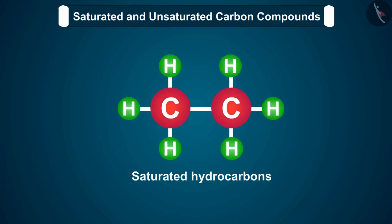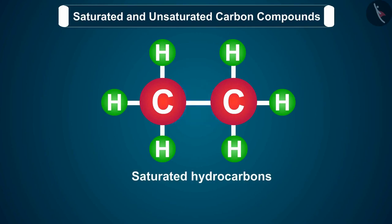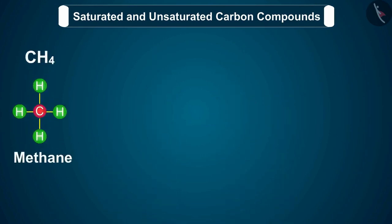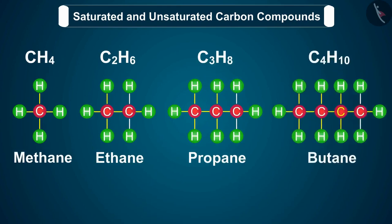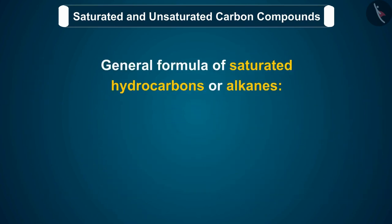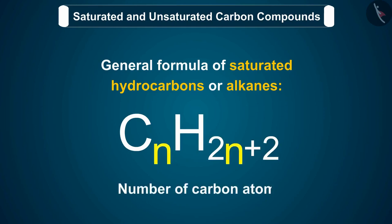A hydrocarbon in which carbon atoms are connected only by single bonds is called a saturated hydrocarbon, also called an alkane. The hydrocarbons methane, ethane, propane, and butane are alkanes. The names of all saturated hydrocarbons end with '-ane'. The general formula of saturated hydrocarbons or alkanes is CnH(2n+2), where n is the number of carbon atoms.